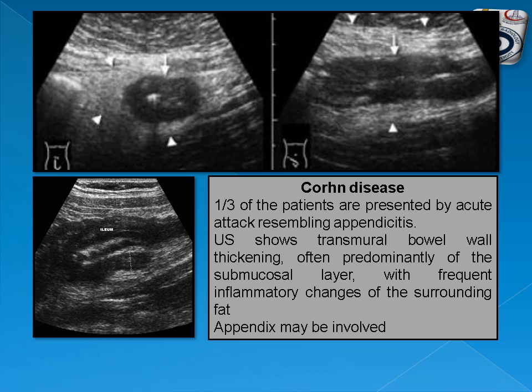In terminal ileitis, for example in Crohn's disease, one-third of patients present with an acute attack resembling appendicitis. Ultrasound shows transmural bowel wall thickening, often predominantly in the submucosal layer, with frequent inflammatory changes of the surrounding fat. The appendix may be involved, but the terminal ileum is almost always also involved — not only the appendix.